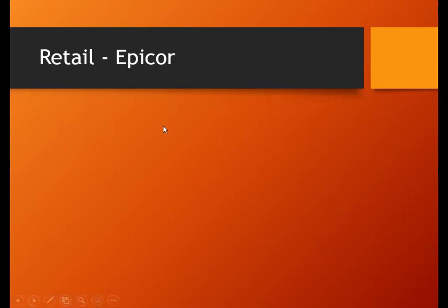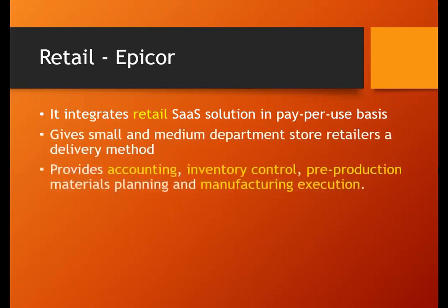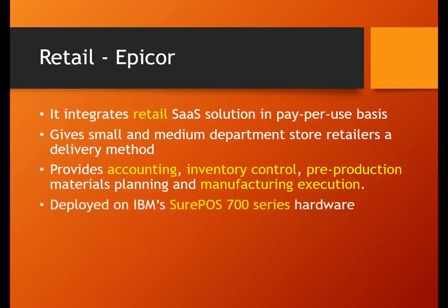Now you understand the concept of retail. Epicor is targeted at retailers on a subscription basis — retailers can purchase Epicor for a one-year subscription, then renew. The types of activities and features Epicor provides include accounting, inventory control, pre-production of materials, and manufacturing execution — all workflows based on the cloud. Epicor has an agreement with IBM; IBM provides POS machines — specifically the IBM SurePOS 700 series — which are used as clients to access the cloud infrastructure.